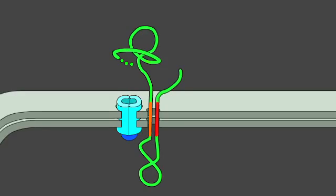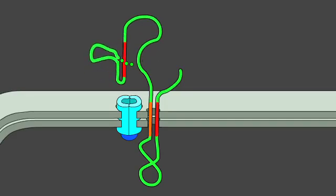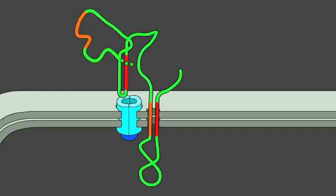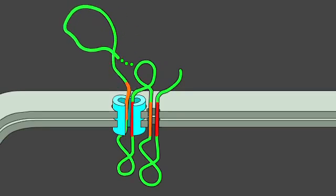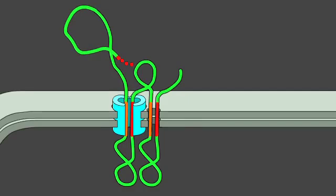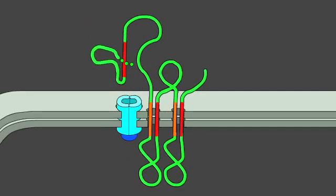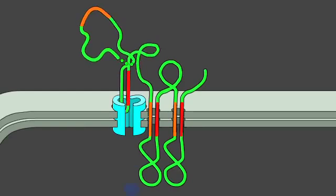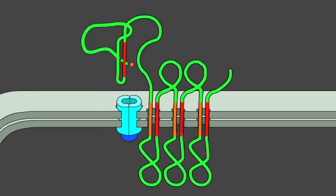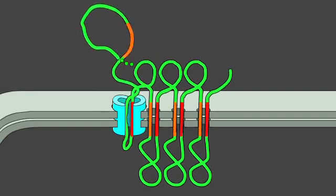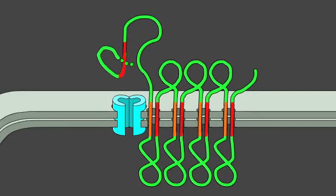In complex multipass proteins, in which many hydrophobic regions span the bilayer, additional pairs of stop and start sequences come into play. One sequence reinitiates translocation further down the polypeptide chain, and the other stops translocation and causes polypeptide release, and so on for subsequent starts and stops. Thus, multipass membrane proteins are stitched into the lipid bilayer as they are being synthesized, by a mechanism resembling a sewing machine.